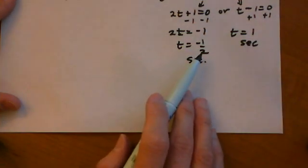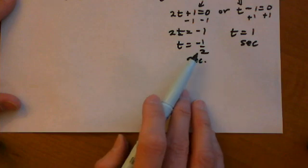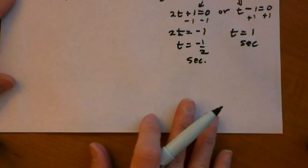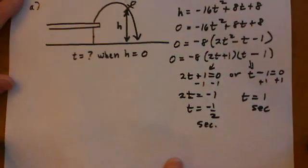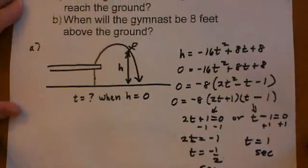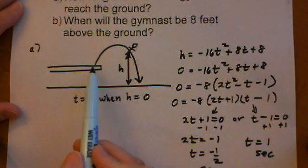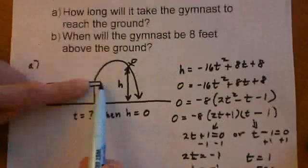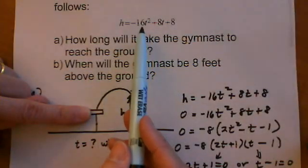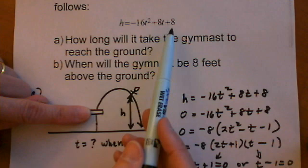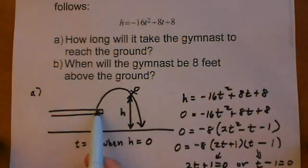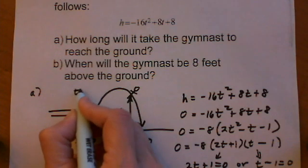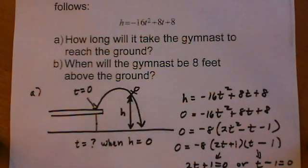Now we've solved this out correctly and gotten a negative time and a positive time. And what we need to ask ourselves is do both of these answers make sense in the problem? So if we look back to the problem, the gymnast is dismounting. And it says that the equation gives her height for the time t that she is in the air. So when she first jumps, that's where t equals 0. Because she's just starting to be in the air. Right, so time is 0 when she jumps.